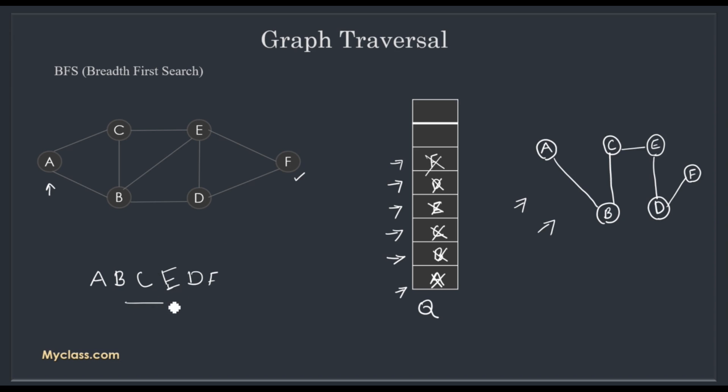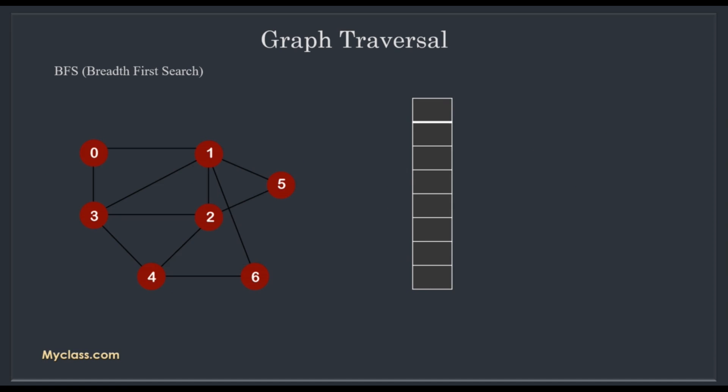No cycles are possible in a spanning tree. We delete F, and now the queue is empty, so BFS stops. The BFS traversal order was: A, B, C, E, D, F.